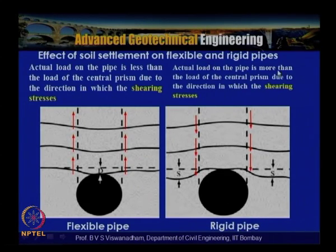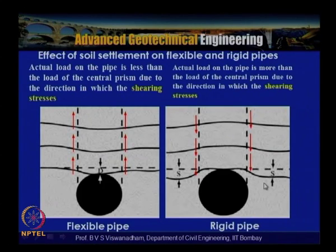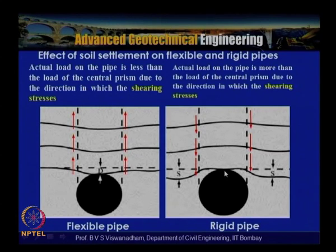For rigid pipes, the actual load on the pipe is more than the load of the central prism, due to the direction in which the shear stresses act — because the surrounding soil settles more than the rigid pipe structure.